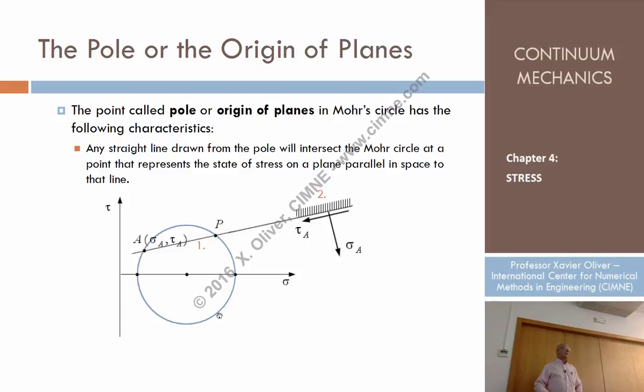and the point that it intersects will provide a sigma and tau. That sigma and tau is precisely the stresses on this plane.